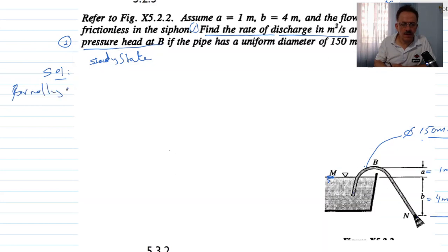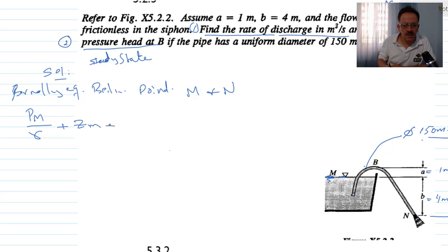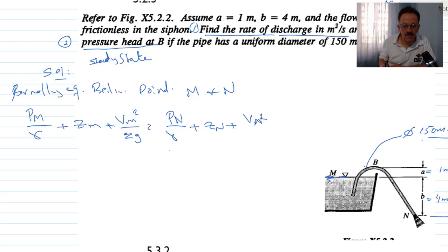For that reason, we apply the Bernoulli equation between points M and N. Since it's frictionless flow: pressure at M divided by gamma plus z at M plus vM squared over 2g should equal pressure at N divided by gamma plus z at N plus vN squared over 2g.